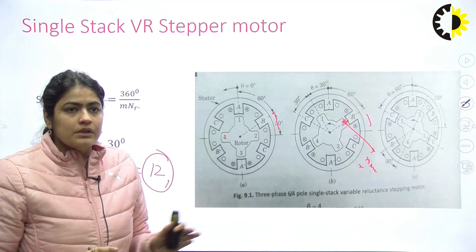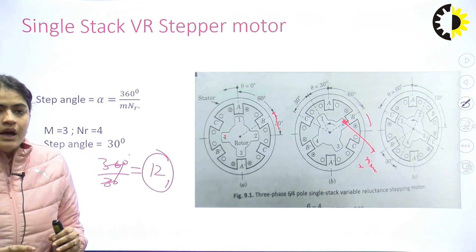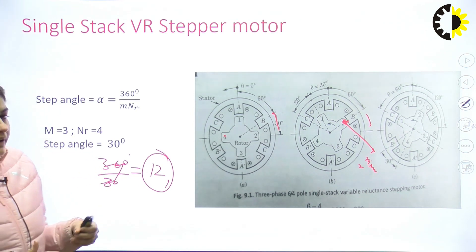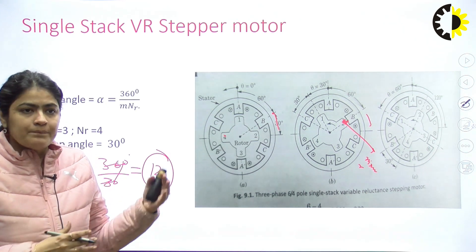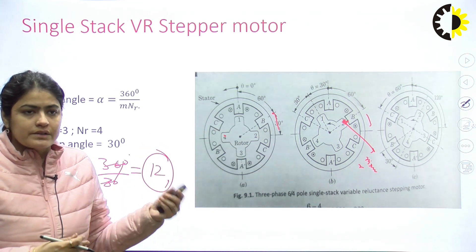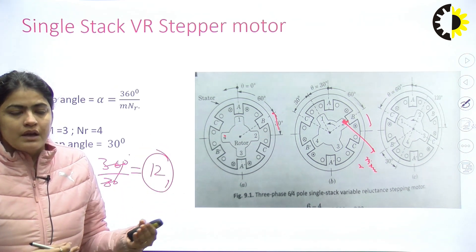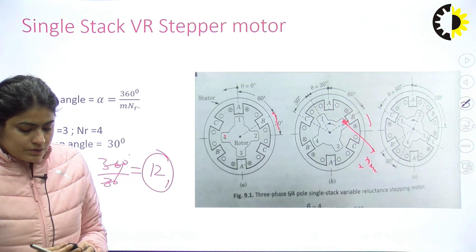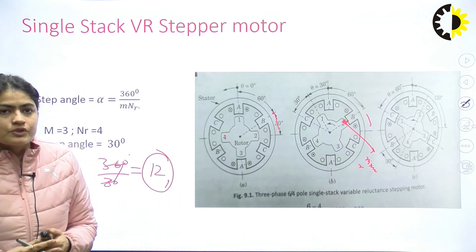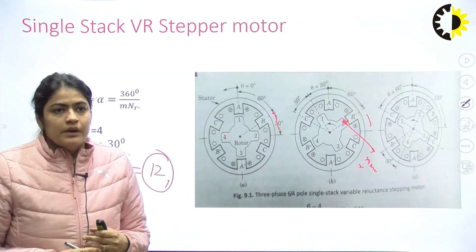This is how the single stack variable reluctance motor works. In the next session we will see the multi-stack and permanent magnet stepper motor types. I am stopping here. Thank you.